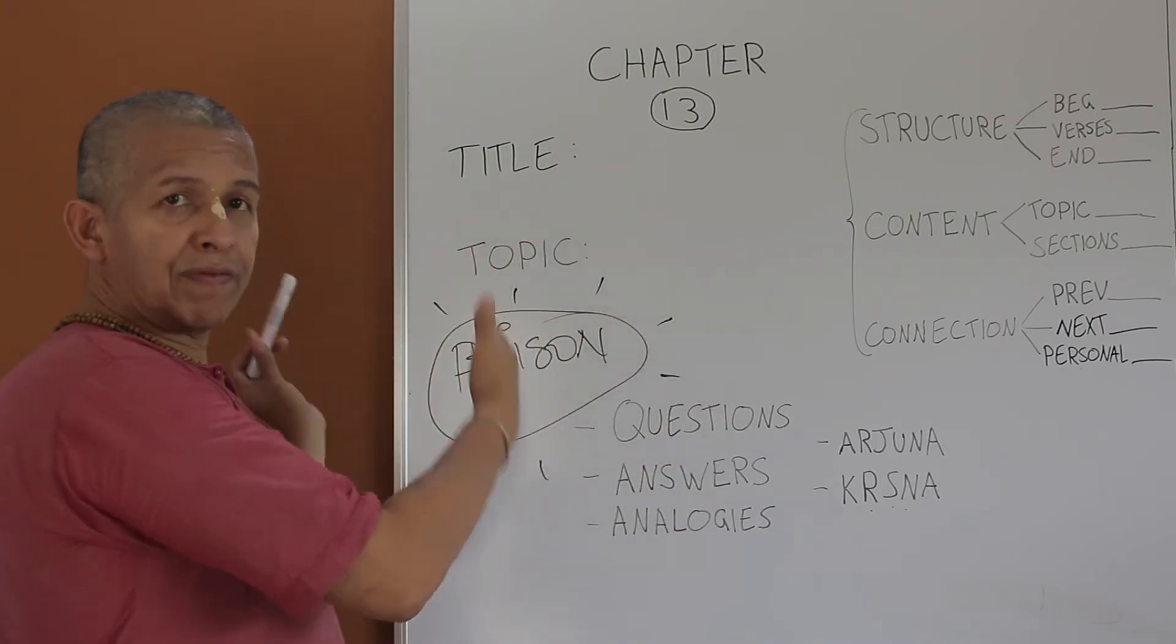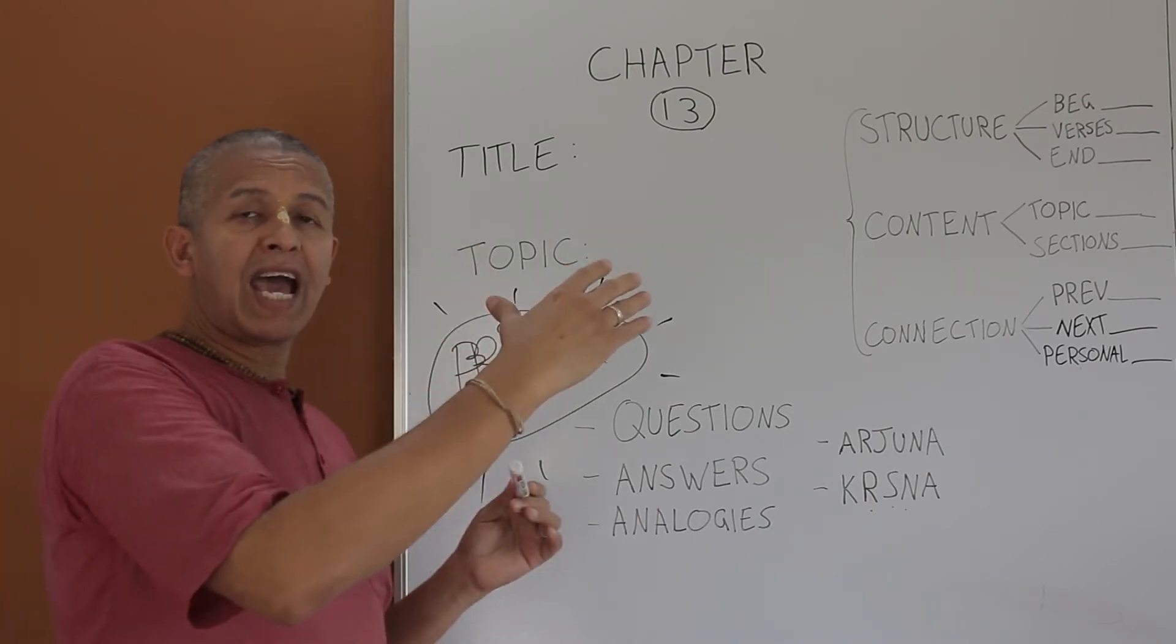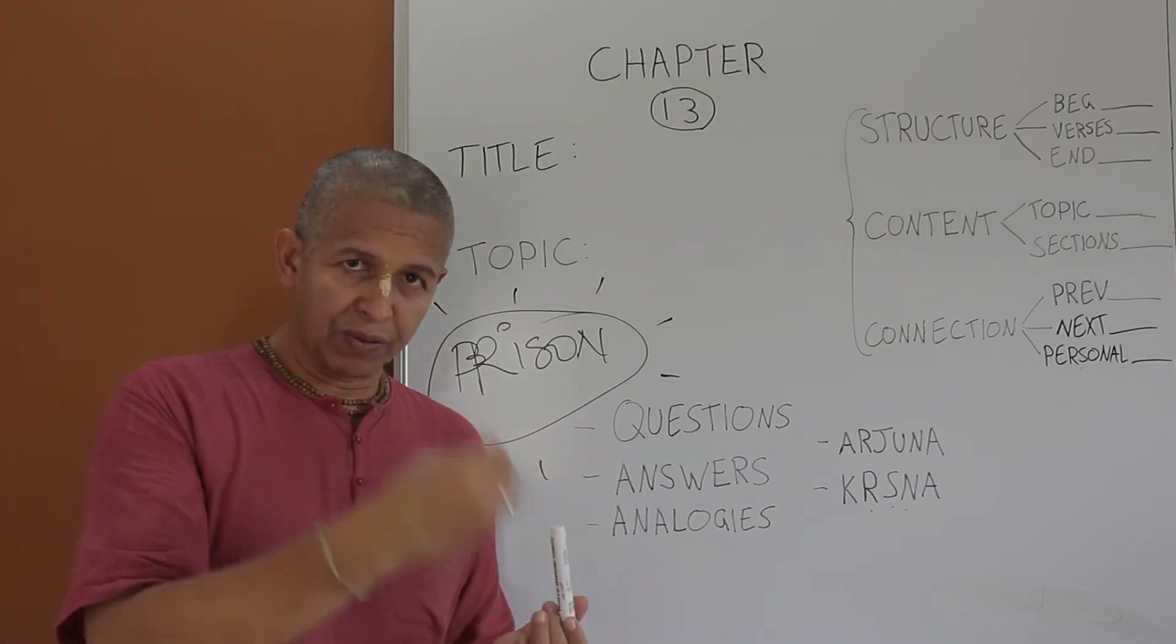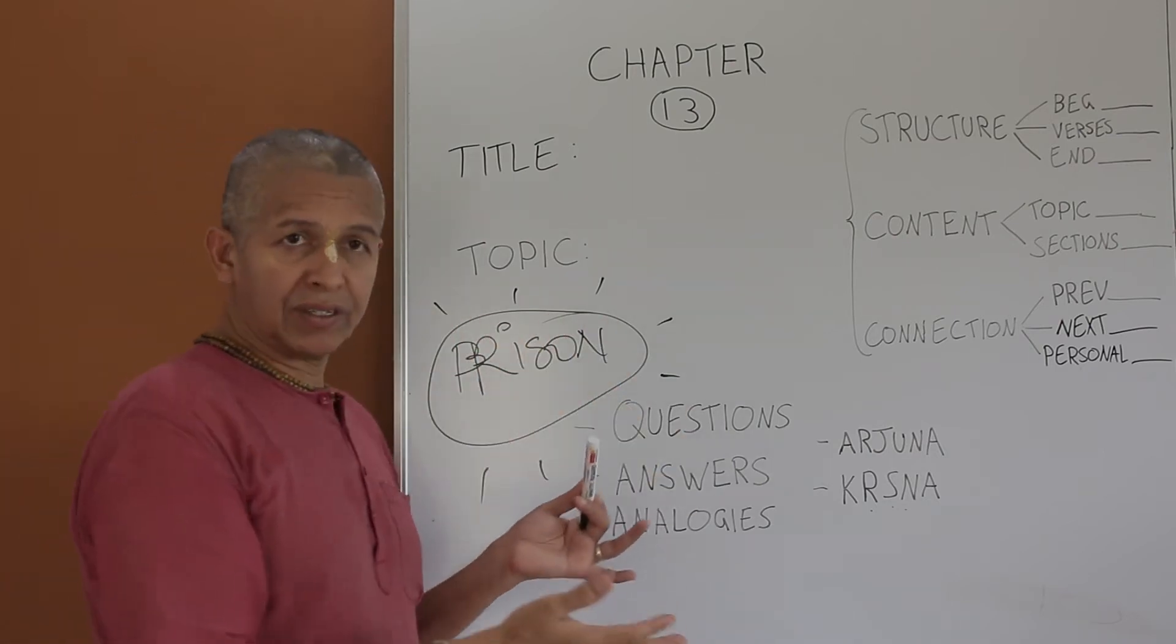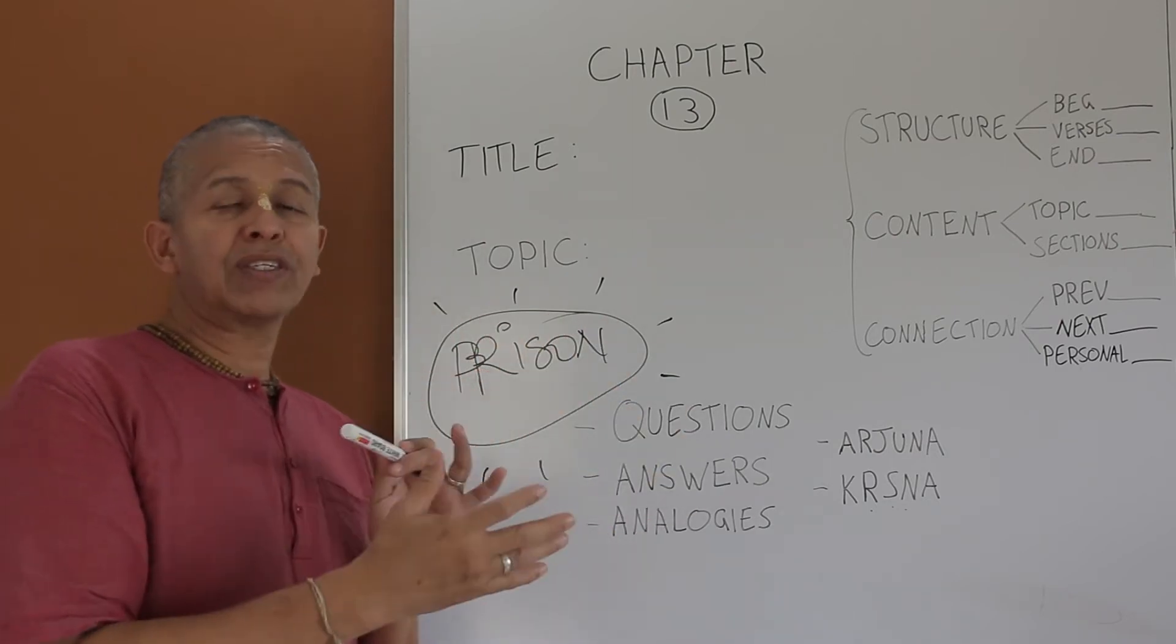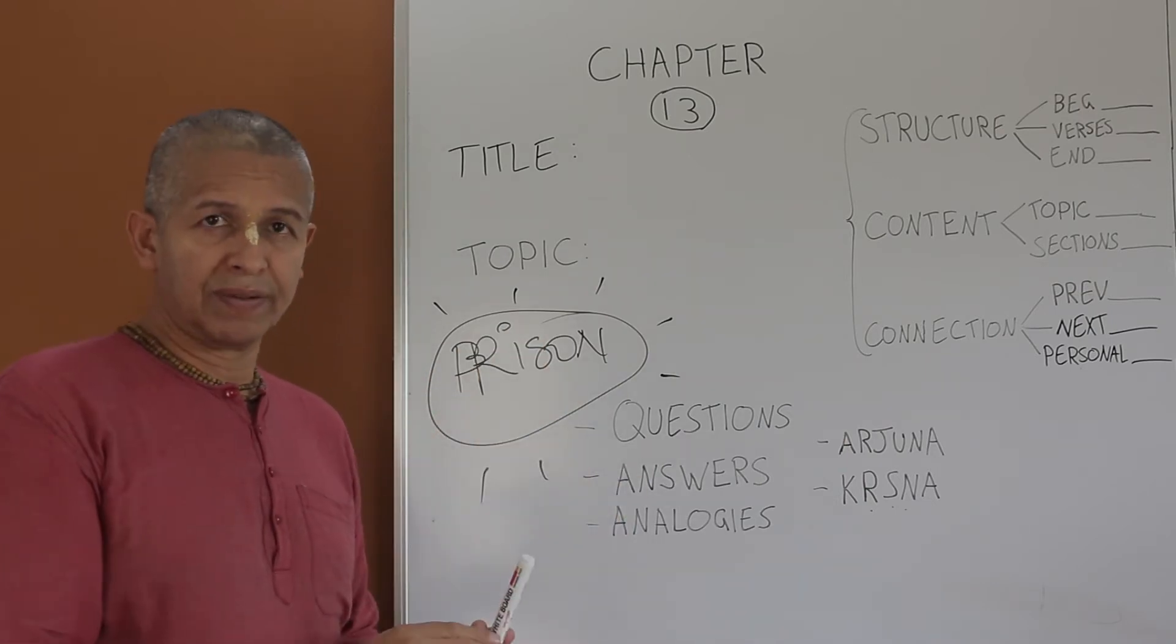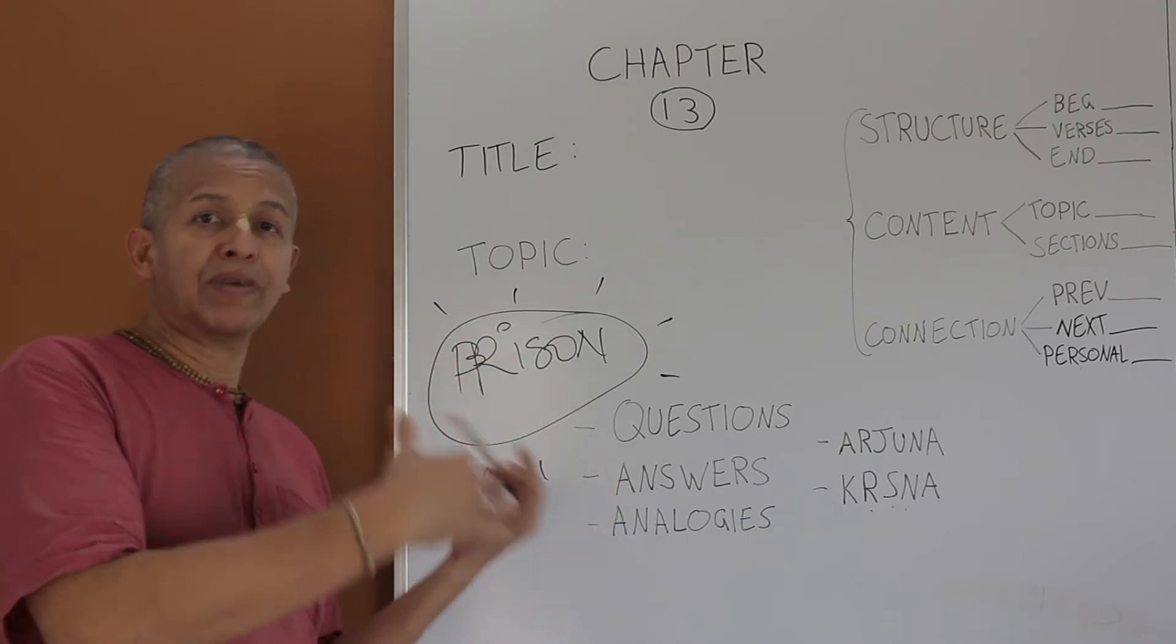The analogy that we use in the first one is amnesia. In the first six chapters, Krishna addressed the problem of us forgetting who we are, what we need to do, what we need to understand. In the middle section, the analogy was a job interview, a job offer, formally presented to Arjuna. But we have a problem now. We all are in prison.